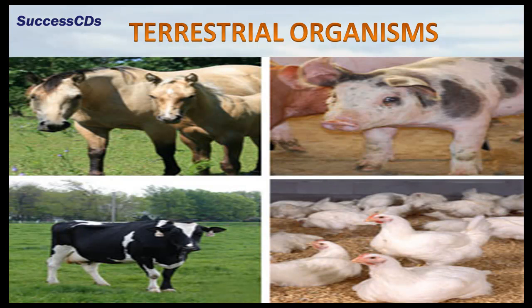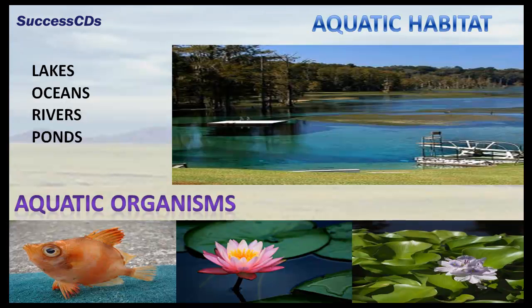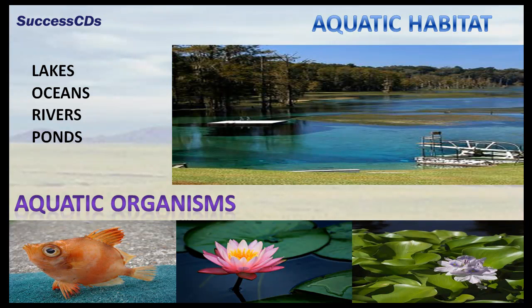Aquatic habitats include habitats in water, like ponds, lakes, rivers, and oceans. Organisms that live in water like fish, lotus, water hyacinth, etc., are aquatic organisms.